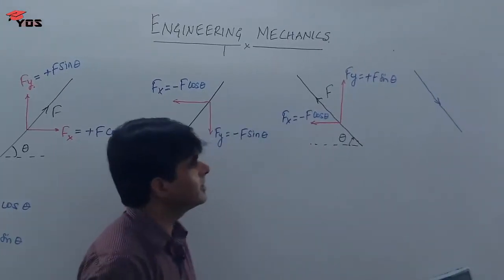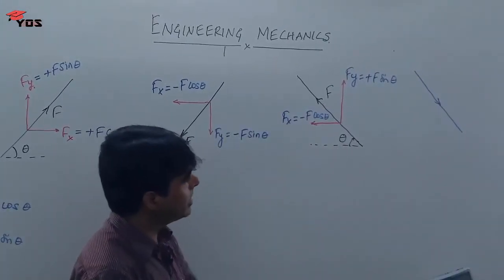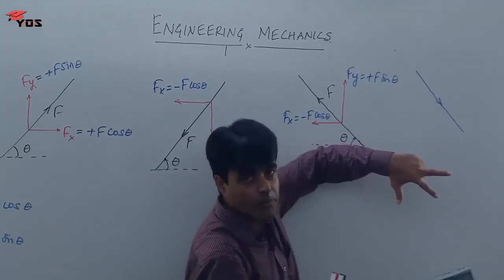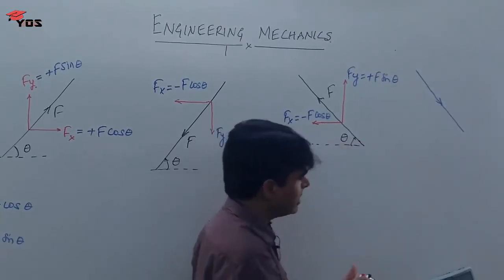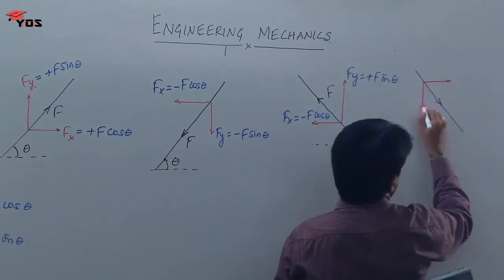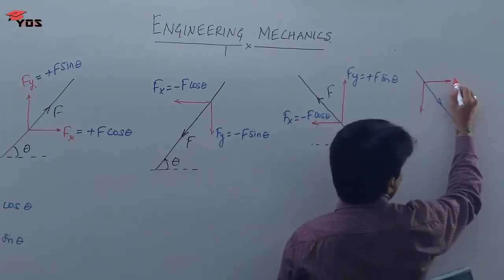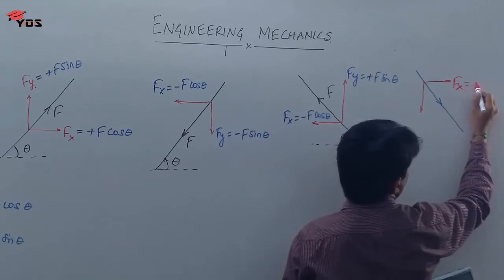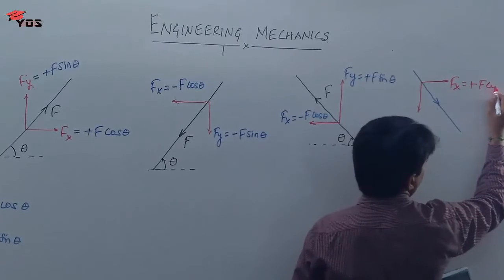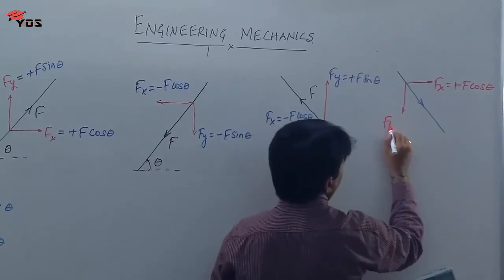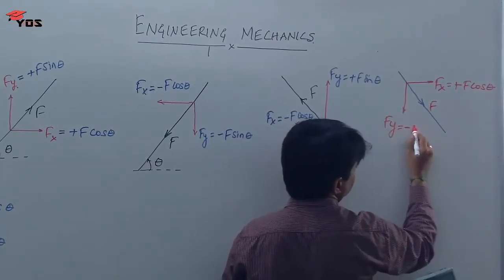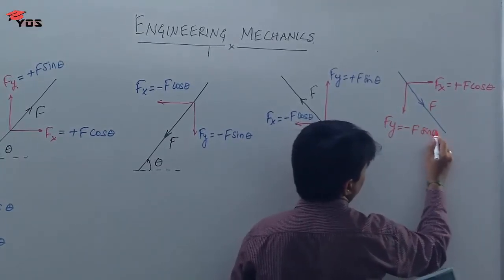One more case — changing the direction again: the index finger shows the force going in this direction, and the two components show x going right and y going downward. So Fx = +F cos theta (towards right, positive) and Fy = −F sin theta (downward, negative).